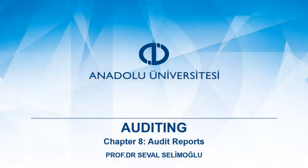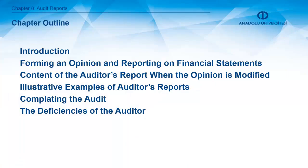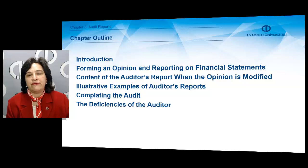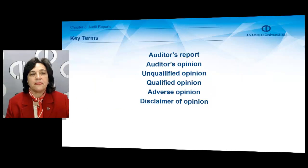This chapter covers audit reports, which is the last chapter of the book and the final stage of the audit process. Now that we've completed the audit process, we will write the reports as an auditor. In this chapter, we are going to talk about forming an opinion and reporting on financial statements, content of the auditor's report, when the opinion is modified, illustrative examples of auditor's reports, completing the audit, and the deficiencies of the auditors.